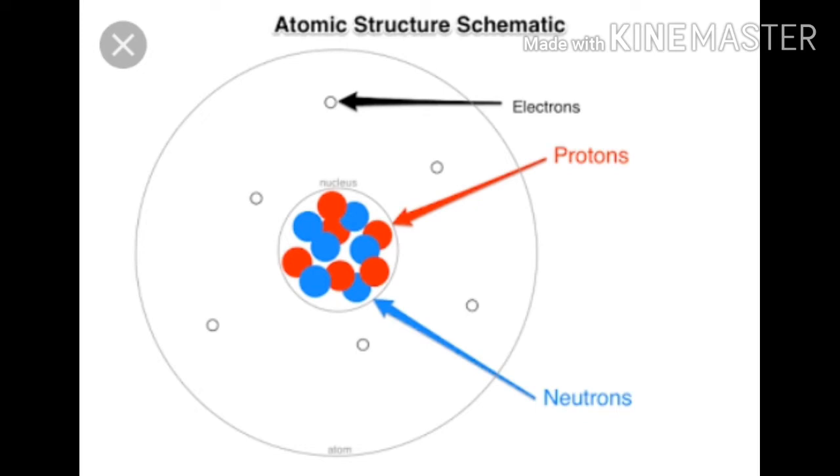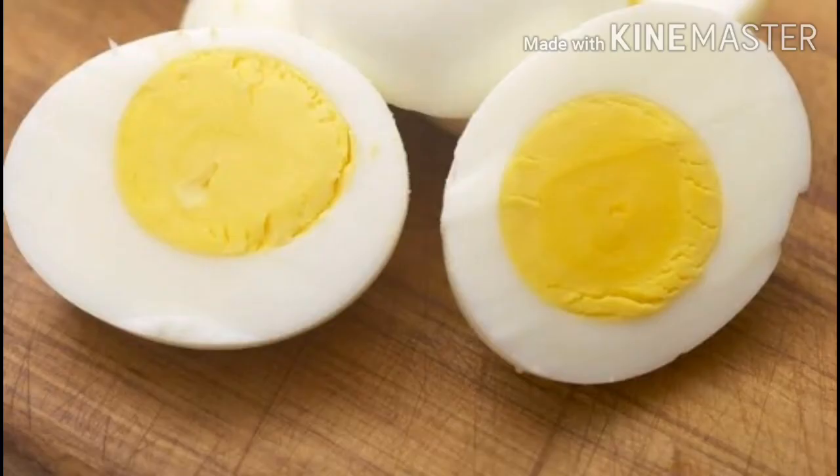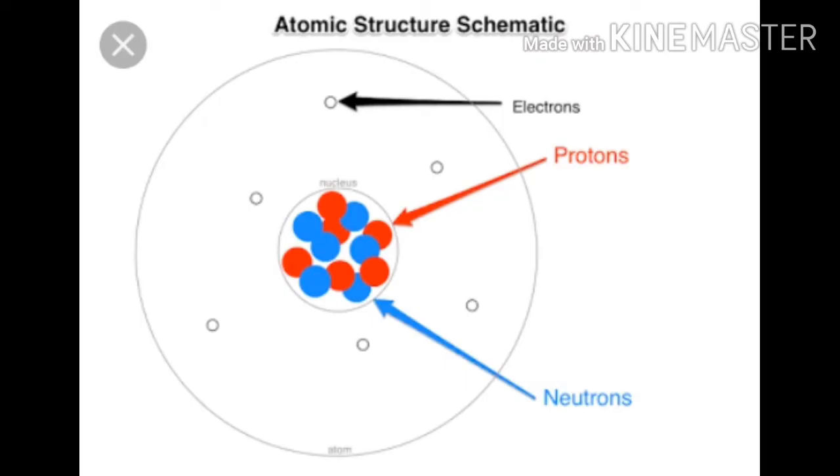Let us consider a boiled egg in which the yellow yolk is called the nucleus and the white part is called the outer space of the nucleus. Here, proton and neutron are present inside the yellow yolk and electron is present in the white part.